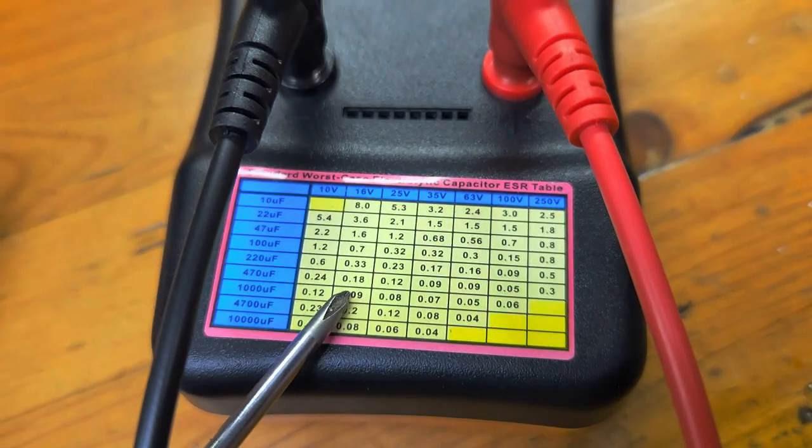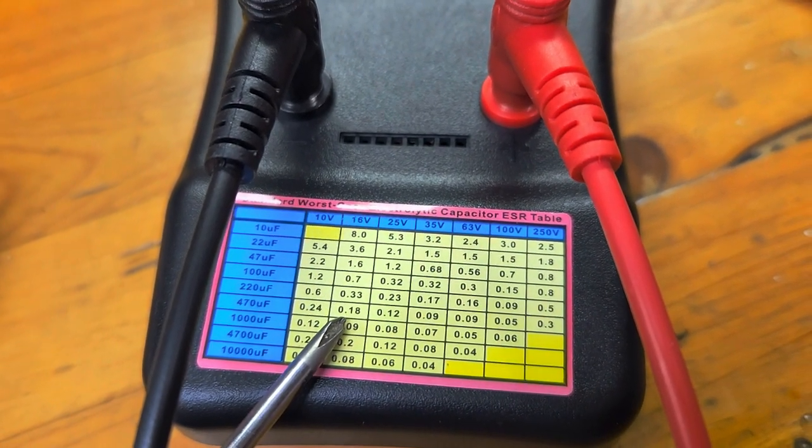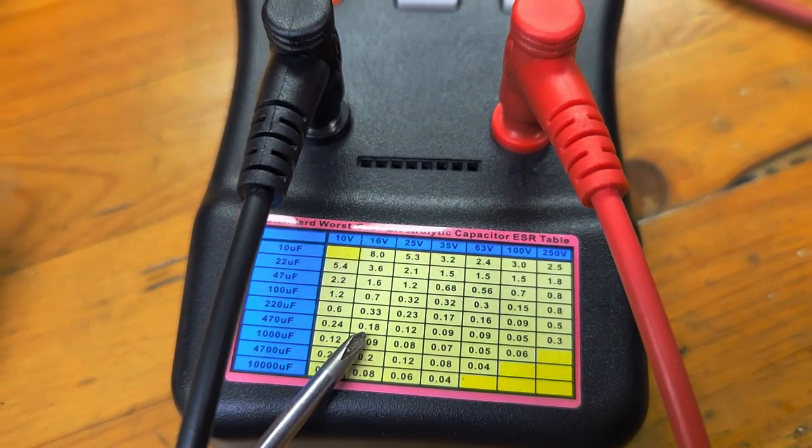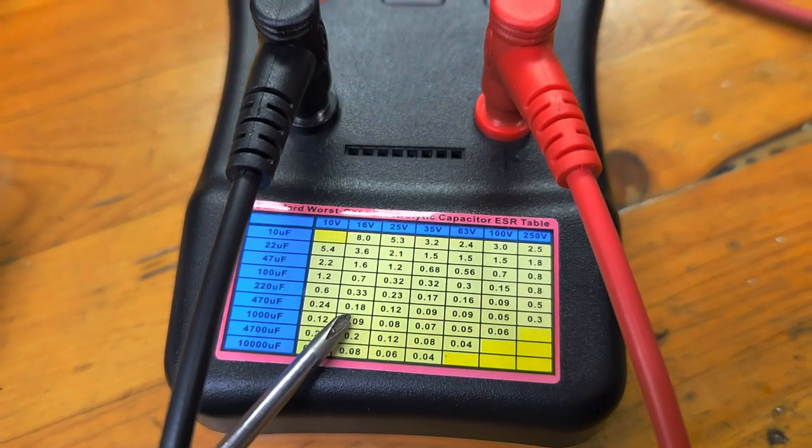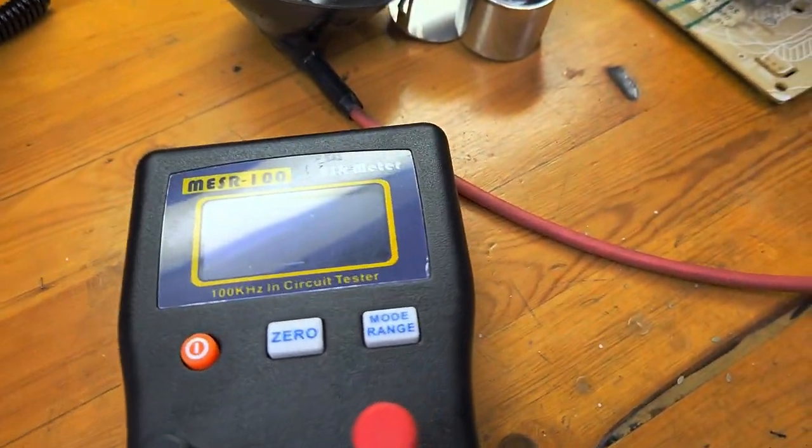So this is worst case scenario. If it's less than 0.18 ohms, it's a good capacitor. Really, it'll also say here in the display and I'll show you what that display looks like and how the measurement goes on this cap.